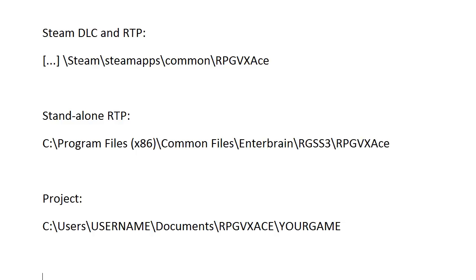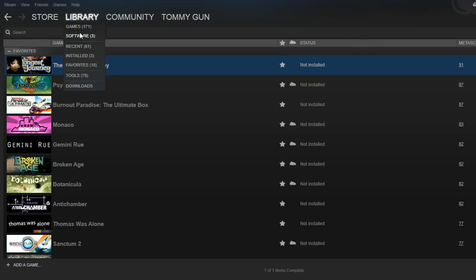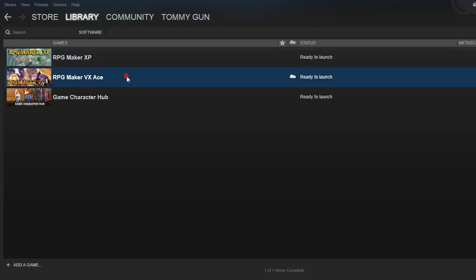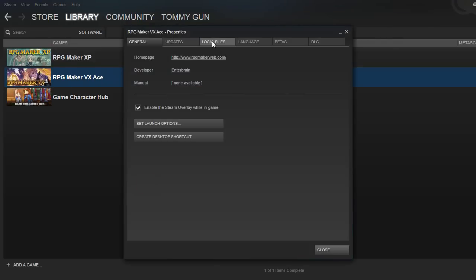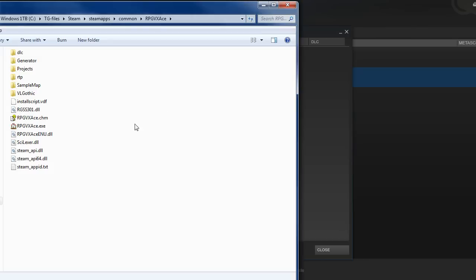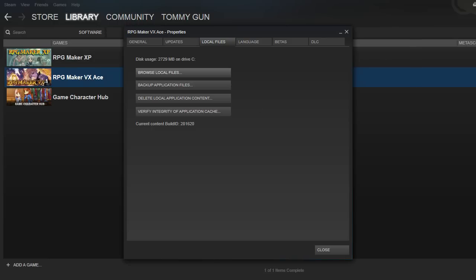For the Steam version, it's wherever you have Steam installed, then slash SteamApps, Common, RPG VX Ace. For the standalone version, it's under Program Files, Common Files, Enterbrain — you can see it right here. That's for the RTP. For your DLC, that's just wherever you happened to save it when you bought it. An easy way to find the Steam DLC folder is to go to your Steam library, click Software, find RPG Maker, right-click, go to Properties, Local Files, and then Browse Local Files — that pops up the folder where you have your DLC folder and your RTP.